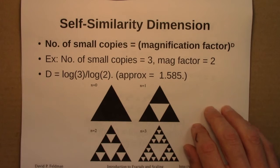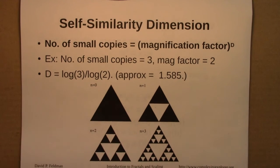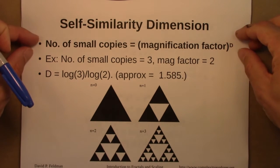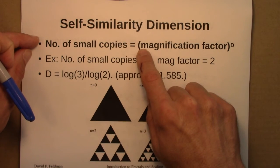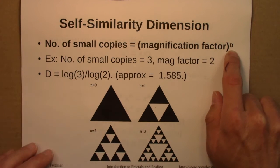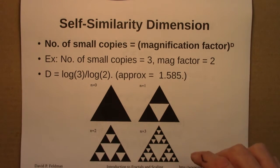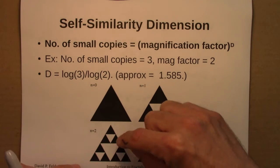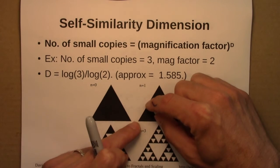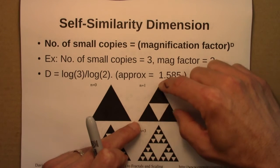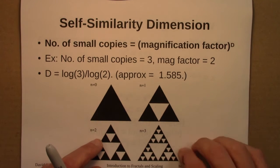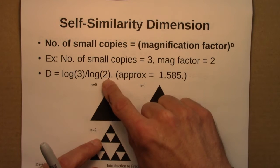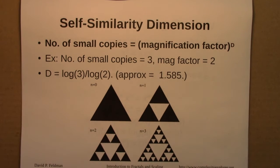We then considered some mathematical fractals, like the Sierpinski triangle, and I introduced the idea of the self-similarity dimension. Here's the key equation: the number of small copies inside an object is equal to the magnification factor, or stretch factor, raised to the d power. For example here, the magnification factor is 2 — to go from there to there, you magnify by 2. And there are 3 smaller shapes. Plugging that into the formula and using logarithms, we get that the dimension is about 1.585.